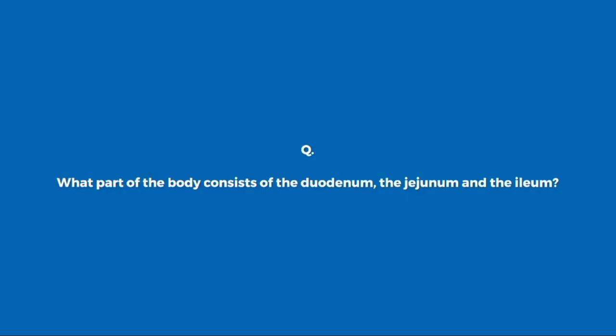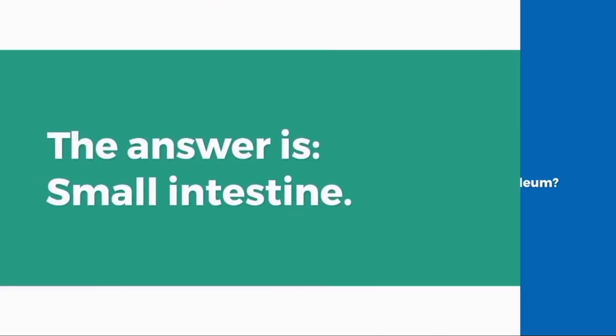What part of the body consists of the duodenum, the jejunum and the ileum? Small intestine.